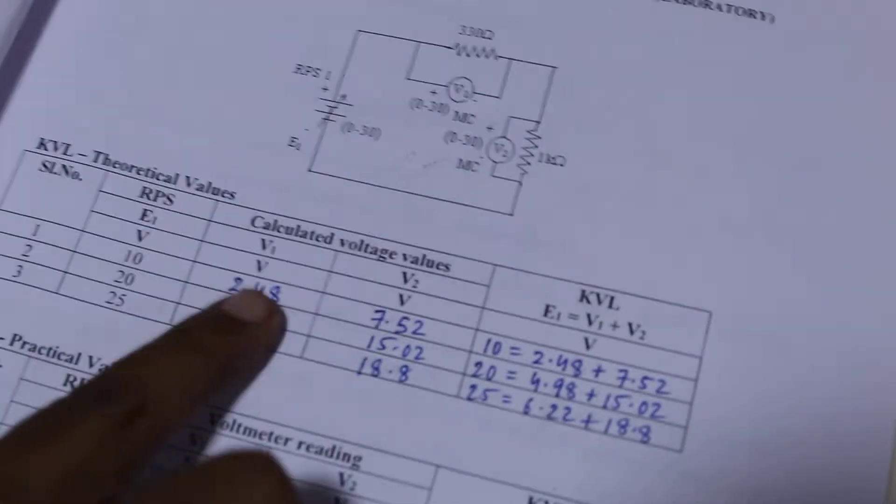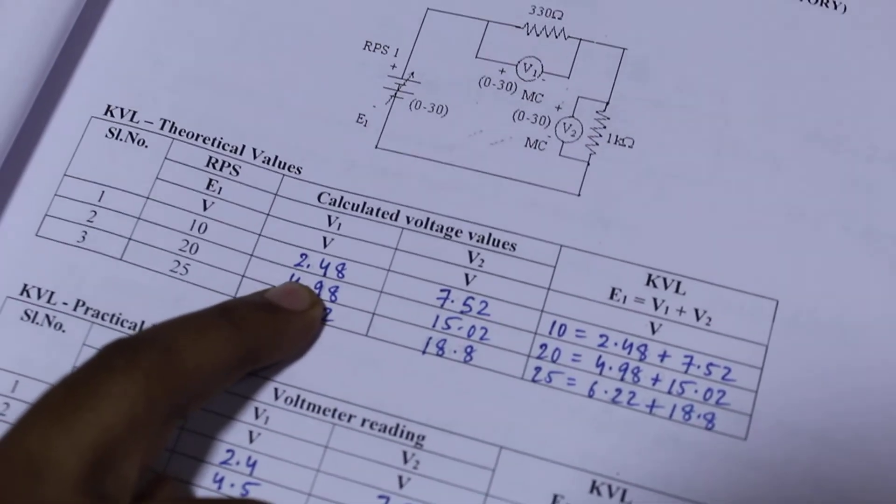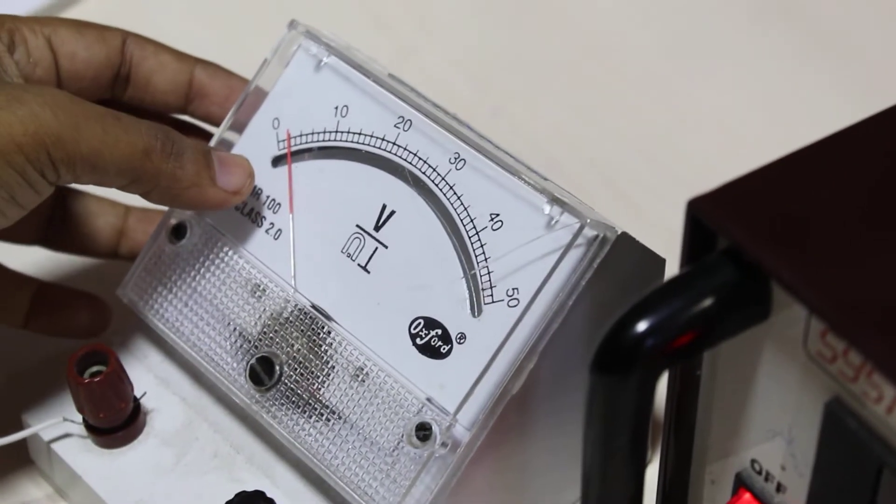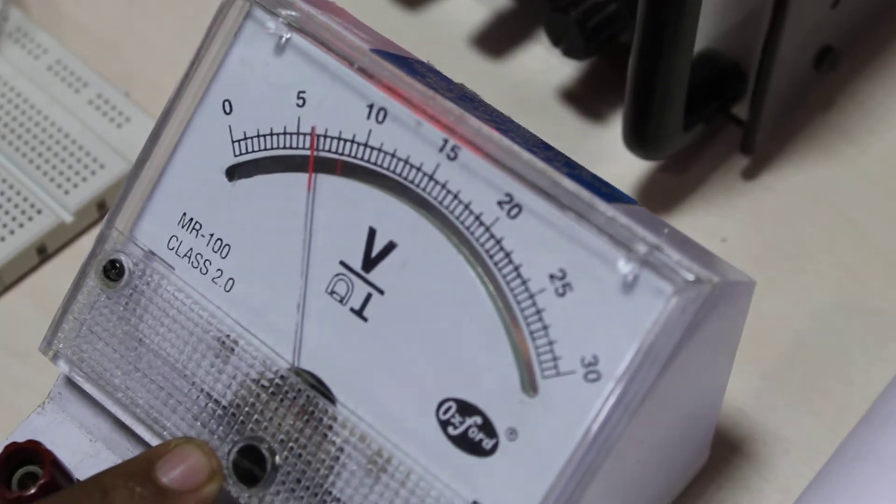For the 10 volts, you should get across V1 is 2.48 volts and across V2 it is 7.52 volts. When it has been tuned at 10 volts, you can see the voltage of your voltmeter V1 which shows 2.48 volts and the second voltmeter shows 7.52 volts.